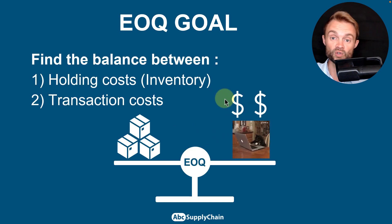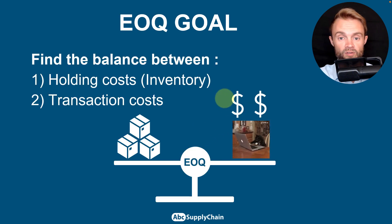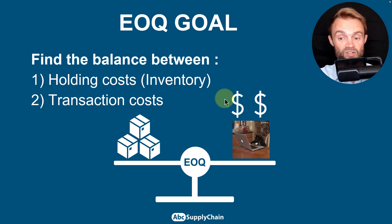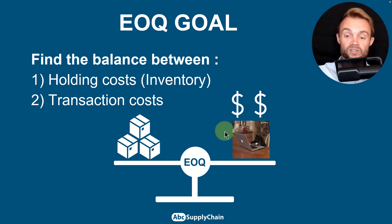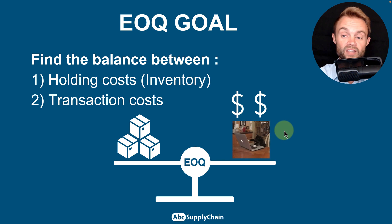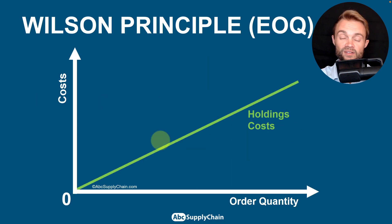So what is the EOQ goal? The EOQ goal is to find the perfect balance between holding costs — the biggest of which is inventory — and transaction costs. The idea is to find that balance, and also combine it with safety stock, which I'll talk about at the end of this video.